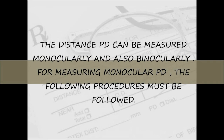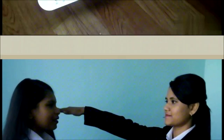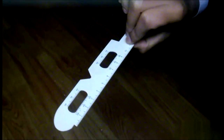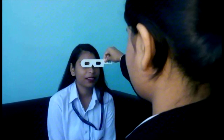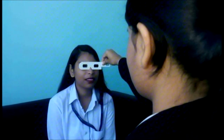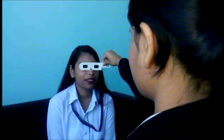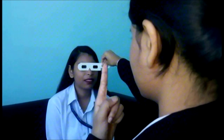For measuring monocular pupillary distance, the following procedures must be followed. The examiner and patient sit opposite each other at arm's length. The examiner holds the PD ruler between their thumb and forefinger, resting the ruler at zero on the bridge of the patient's nose, and steadies their hands by placing their remaining fingers against the patient's head.